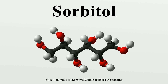Sorbitol, also known as glucitol, is a sugar alcohol with a sweet taste which the human body metabolizes slowly. It can be obtained by reduction of glucose, changing the aldehyde group to a hydroxyl group. Most sorbitol is made from corn syrup, but it is also found in apples, pears, peaches, and prunes.